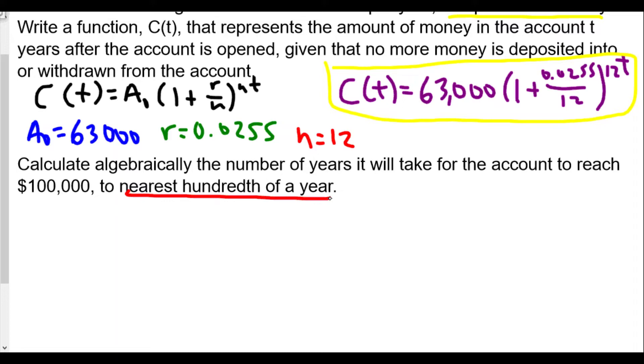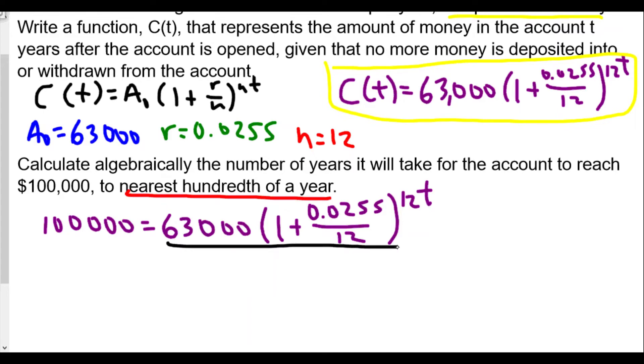We're solving for the unknown value t. We know C(t), the amount we want, the end is going to be $100,000. That's equal to 63,000 times one plus 0.0255 over 12 raised to 12t power. This is our first step, setting up the equation. We're then going to divide both sides by 63,000 to isolate t.